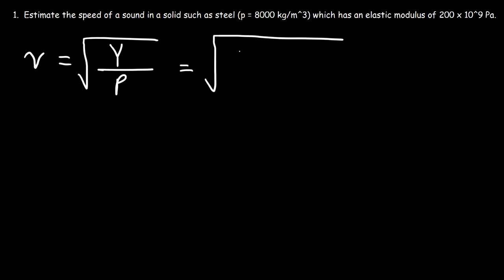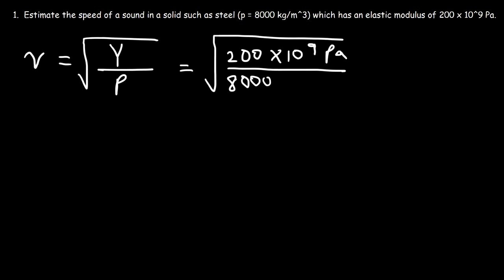The elastic modulus of steel is 200 times 10 to the 9 pascals, or 200 gigapascals. The density of steel is 8,000 kilograms per cubic meter. So let's divide 200 times 10 to the 9 by 8,000, and then take the square root of that result. The speed of sound in steel is about 5,000 meters per second.